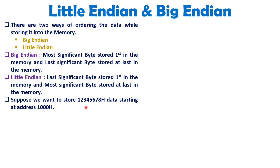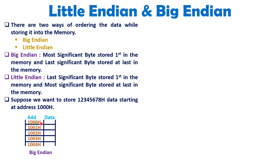When you store this data on memory starting from address 1000 hex with respect to Big Endian, the most significant byte gets stored first. So, 12 hex gets stored at address 1000 hex. Then 34 hex is stored at the next address, then 56 hex, and at last 78 hex. In Big Endian, the most significant byte is stored first and the least significant byte is stored last.